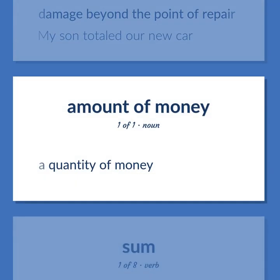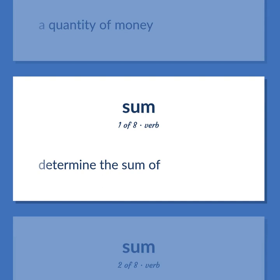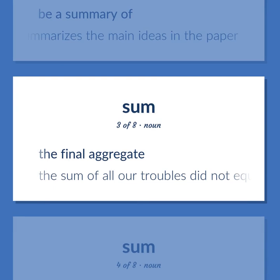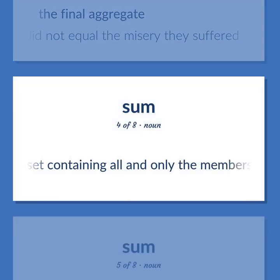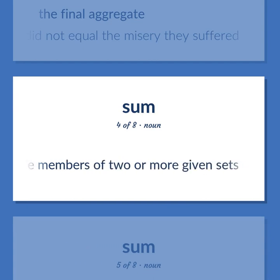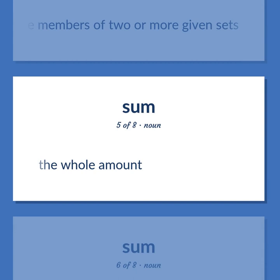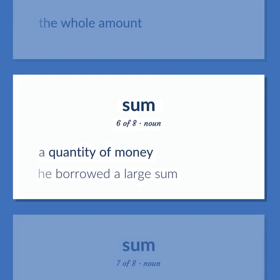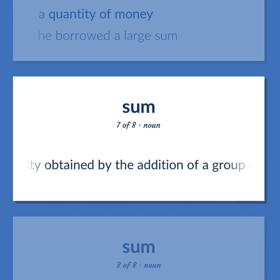Sum: A quantity of money. To determine the sum of. To be a summary of — the abstract summarizes the main ideas in the paper. The final aggregate — the sum of all our troubles did not equal the misery they suffered. A set containing all and only the members of two or more given sets. The whole amount. A quantity of money — he borrowed a large sum. A quantity obtained by the addition of a group of numbers.